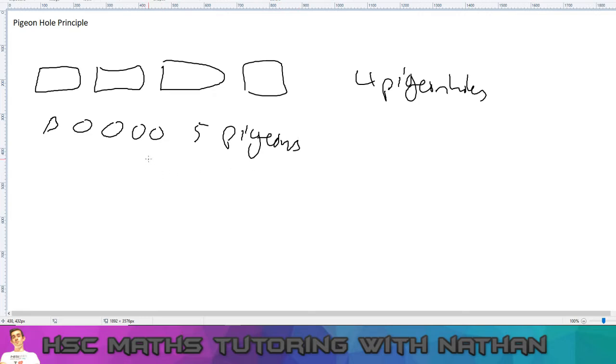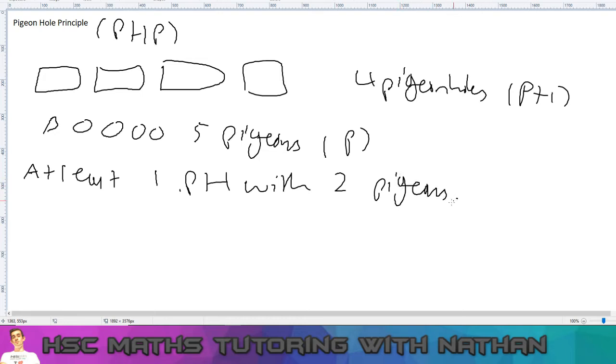So the pigeonhole principle states that there is at least one pigeonhole with two pigeons. So I'm going to call this pigeonhole principle—there's at least one pigeonhole, I should abbreviate that just to save me some time, pigeonhole with two pigeons. How we come to that is we do the pigeons divided by the pigeonholes, which is 5 divided by 4, which gives us 1 with remainder 1.